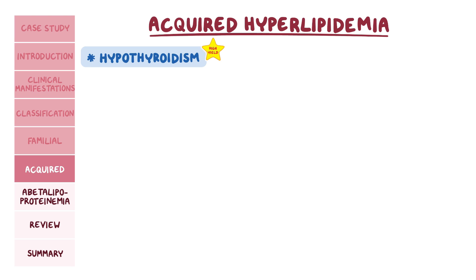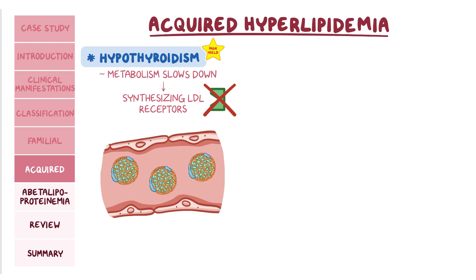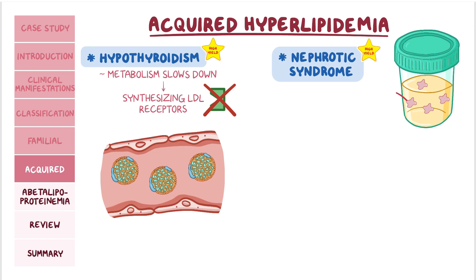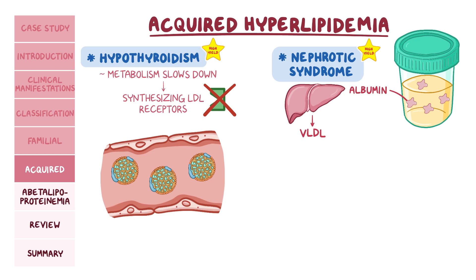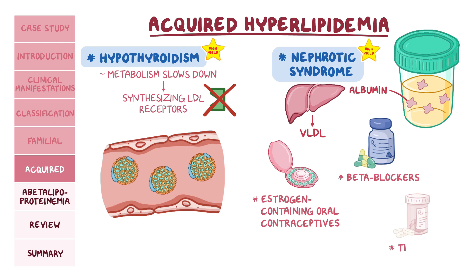In hypothyroidism, the body's metabolism slows down. This includes synthesizing LDL receptors. Without LDL receptors, LDL particles can't return to the liver, so they lurk in the blood. In nephrotic syndrome, plasma proteins like albumin are lost in the urine. In an attempt to compensate for the decrease in plasma protein, the liver starts making VLDL. Through various mechanisms, certain groups of medications can also cause hyperlipidemia. These include estrogen-containing oral contraceptives, beta-blockers, and thiazide diuretics.